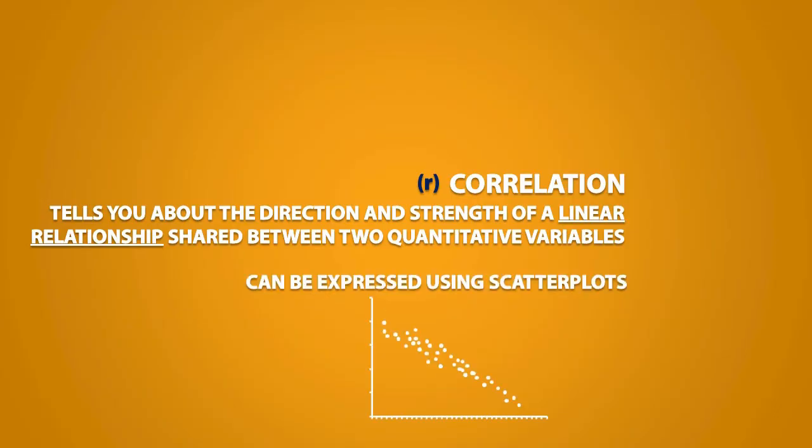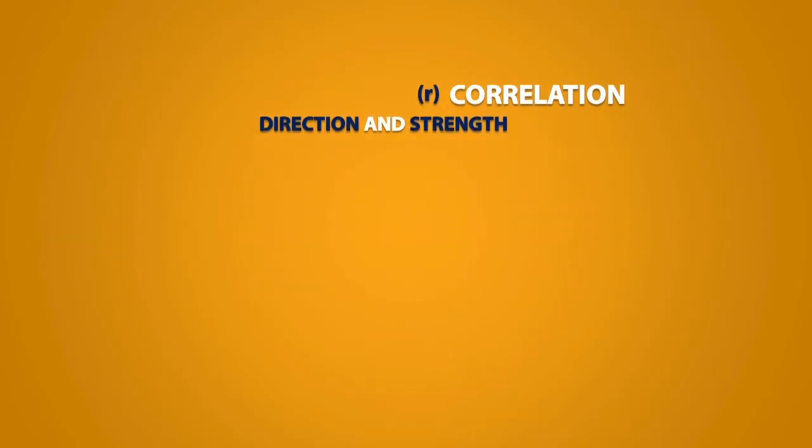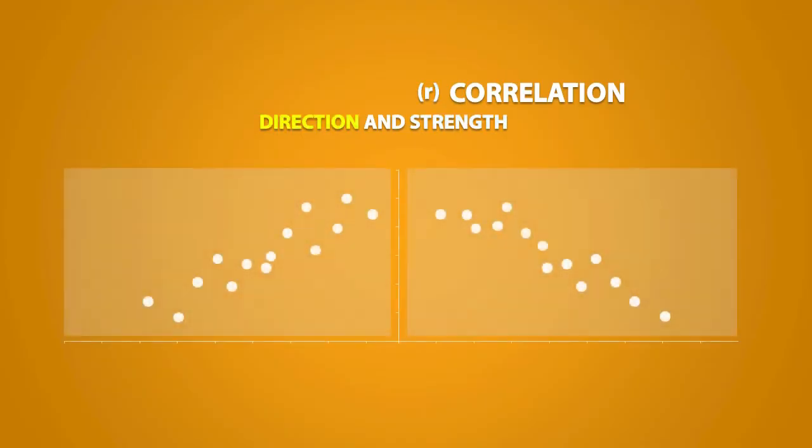Correlation can be expressed using scatter plots. So let's talk about how direction and strength is measured by correlation. We'll talk about direction first. Correlation tells us about the direction or slope of a set of data.